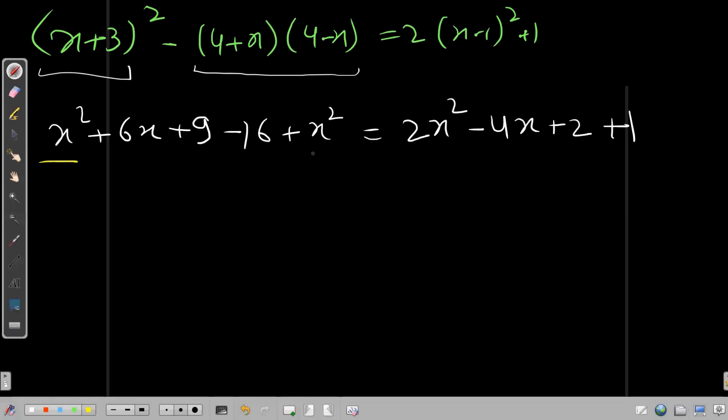So this x², this x², and this 2x² would be cancelled. This would become a negative 7 plus 6x equals negative 4x plus 3. Is it right?